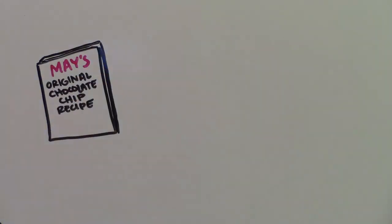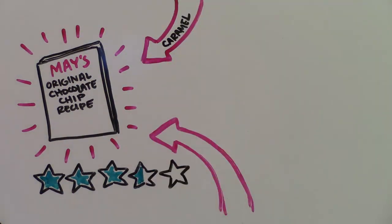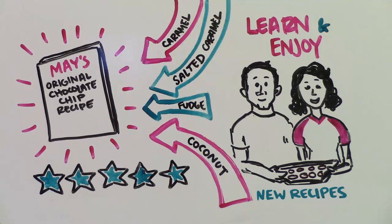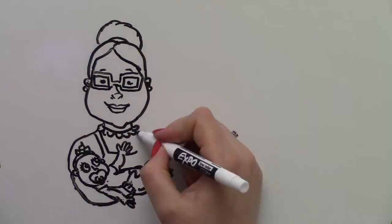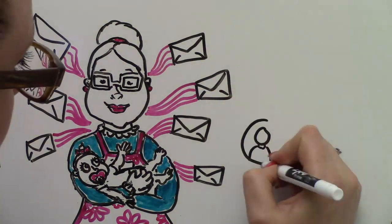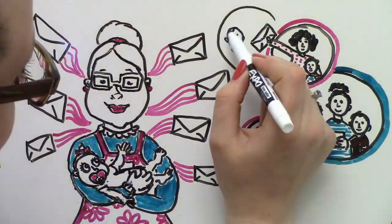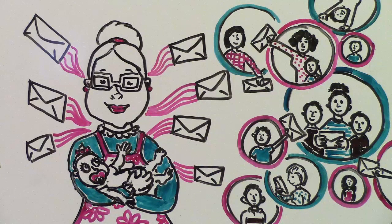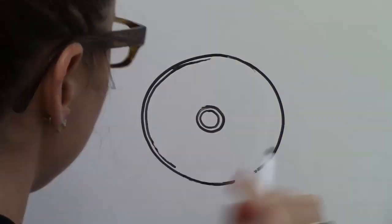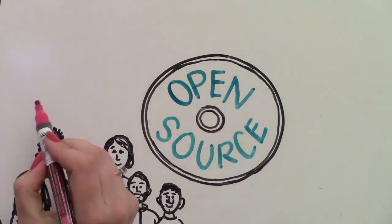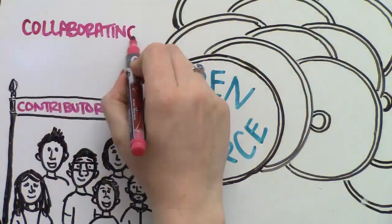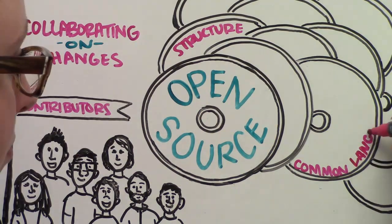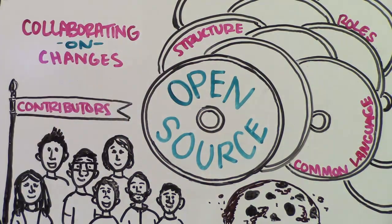Grandma May's recipe is getting better all the time as people continue to contribute, and her family gets to learn from and enjoy the latest and newest cookie recipes as they are created. As Grandma May's family grows and her recipe is shared outside the family, more and more people will become contributors. As you can imagine, things could get pretty complicated for Grandma May as the maintainer with more contributors — and the same is true for open source software. More contributors and more versions of code make it essential to have a way of collaborating on changes, which is why we need the structure, common language, and roles we just talked about.